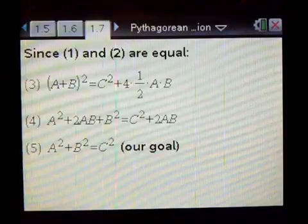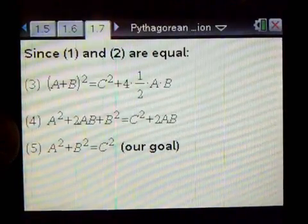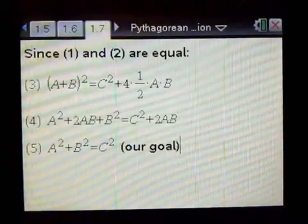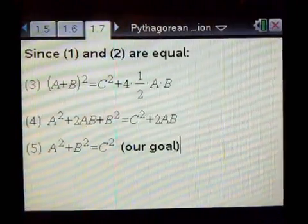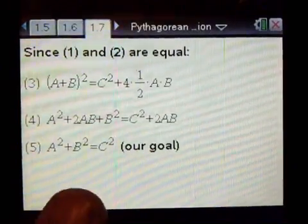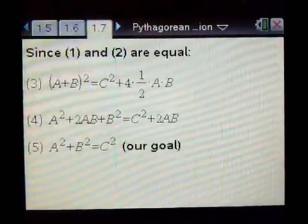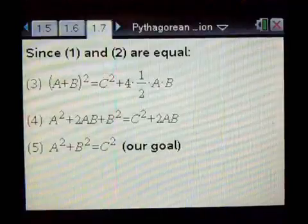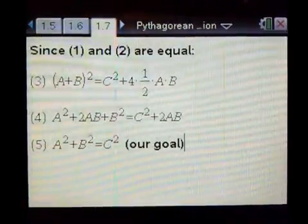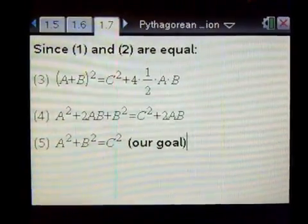Since they are both equal, we'll do some simplification. Note in line four that the term 2AB is common. We can subtract 2AB from both sides, and we end up with the goal: A squared plus B squared is equal to C squared. Thank you very much for watching this video, and have a great day.